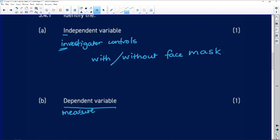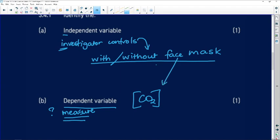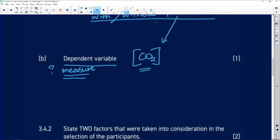The dependent variable is the one that we have to measure. It's the one that we don't know at the start of the investigation. We know wearing a face mask, take the face mask off, that we are controlling. But we have no idea how the carbon dioxide levels are going to change as a result. So our dependent variable is the carbon dioxide concentration or levels of carbon dioxide in the blood.